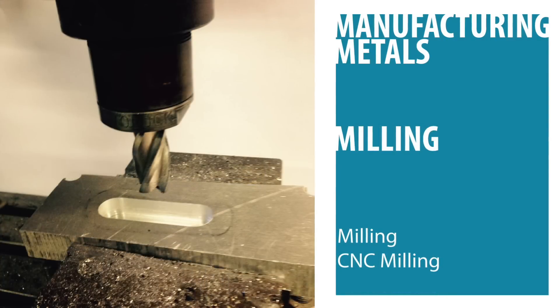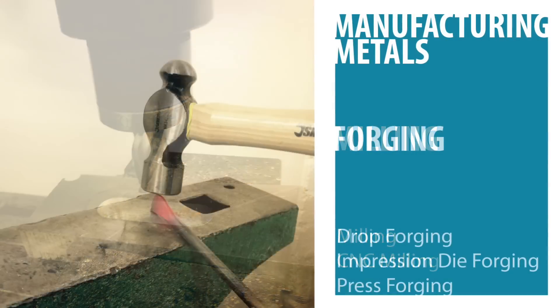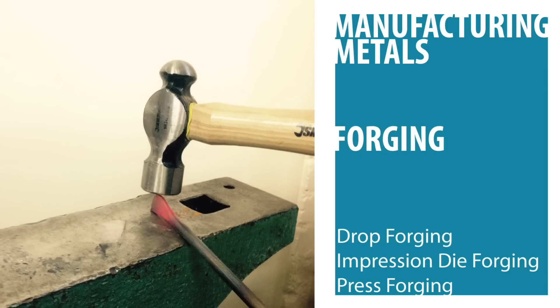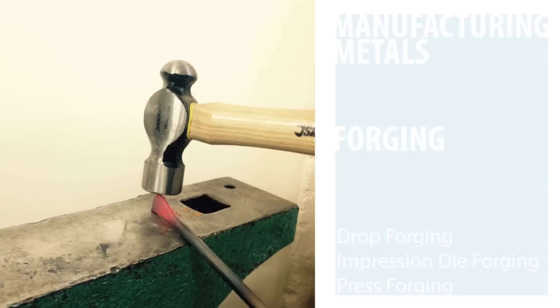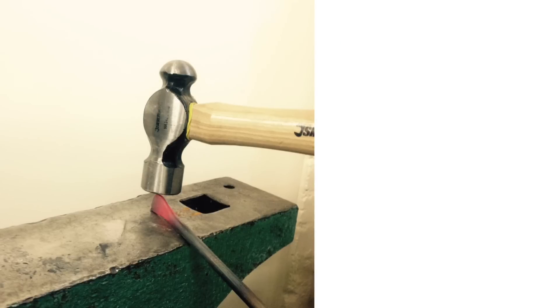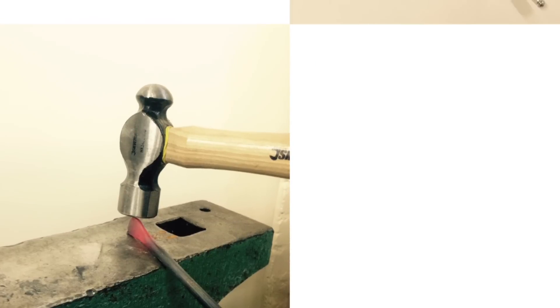The milling machine can be used to create profiles and face-off surfaces. Additionally, you can use forging processes such as drop forging, impression die forging, and press forging to create strong parts and components.